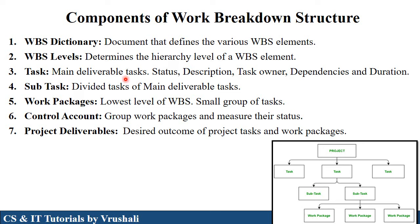The next component is a task, meaning main tasks or main modules. Subtasks are those main tasks divided into different subtasks. Then work packages — work packages are placed at the lowest level of WBS and represent a small group of tasks which indicate the status of your complete project. The next one is a control account, which is a group of work packages. It measures the status — what type of task has been performed and how much time is required to complete a particular task, showing the status of your project module by module. The last component is project deliverable — after completing the project, the desired outcome is mentioned in one task, which is delivered to the customer.